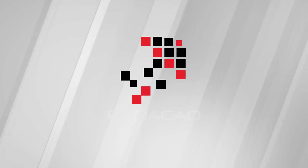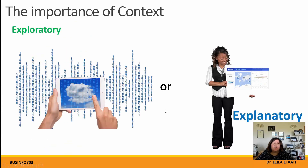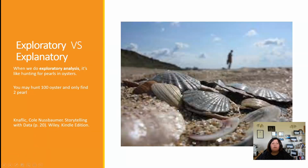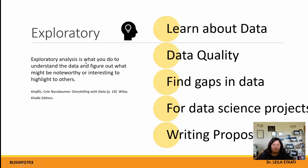We do data visualization for two main aspects: one is to explore the data, another one is to explain what is happening in the data. Exploratory and explanatory — the exploratory process is like hunting for the pearl, as Cole mentioned in his book. You may check about 200 different oysters and just find one. You search for specific things, and in explanatory you show and talk about your findings to the audiences.